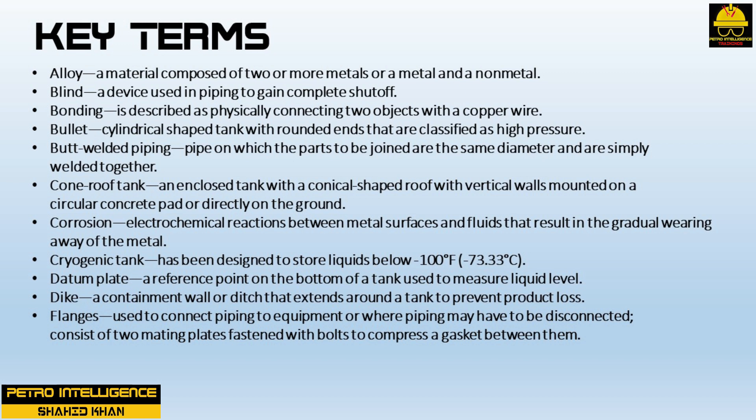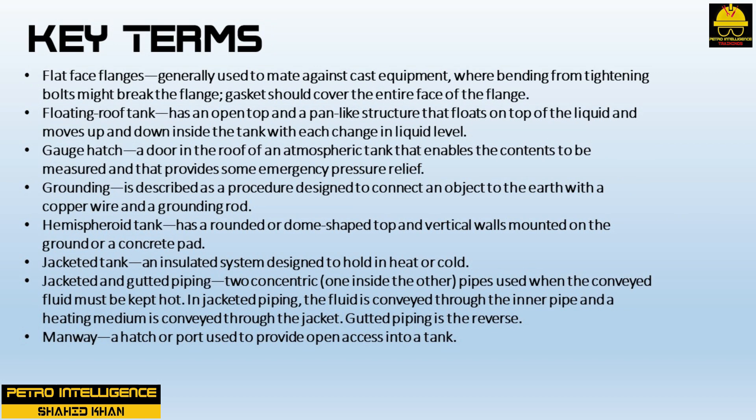A cryogenic tank is designed to store liquids below minus 100 degrees Fahrenheit or minus 73.33 degrees Celsius. A datum plate is a reference point on the bottom of a tank used to measure liquid level. A dike is a containment wall or ditch that extends around a tank to prevent product loss. Flanges are used to connect piping to equipment or where piping may have to be disconnected; they consist of two mating plates fastened with bolts to compress a gasket between them. Flat face flanges are generally used to mate against cast equipment where bending from tightening bolts might break the flange — the gasket should cover the entire face. A floating roof tank has an open top and a pan-like structure that floats on top of the liquid, moving up and down with changes in liquid level.